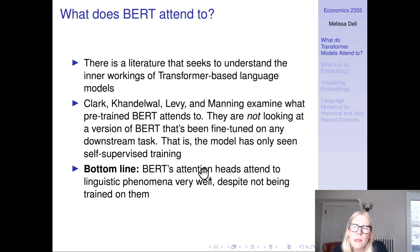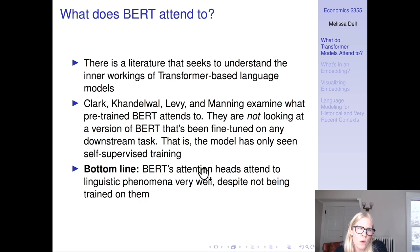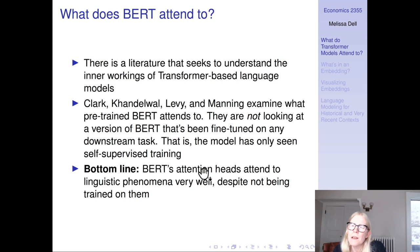I want to try to get a little bit more intuition for what a transformer attends to. The key ingredient of the transformer is attention — self-attention within a sequence — and there is a literature that seeks to understand the inner workings of transformer-based language models by looking at the attention maps. There's a paper by Manning, a pioneer of NLP, and his collaborators, that looks at what a pre-trained BERT model attends to.